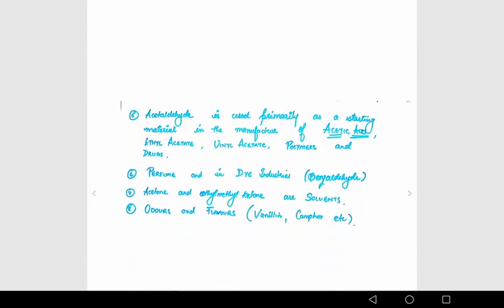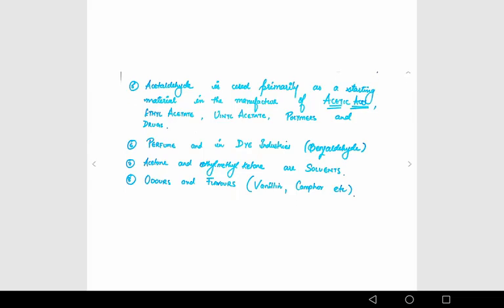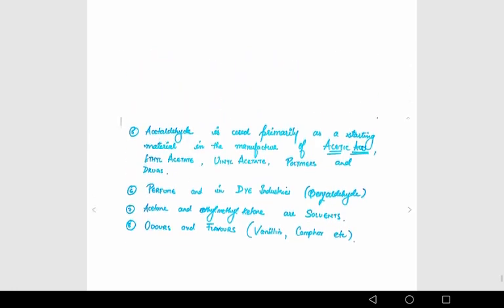Fifth, acetaldehyde is used primarily as starting material in manufacture of acetic acid, ethyl acetate, vinyl acetate, polymers and drugs. Sixth, perfumes and dye industry use benzaldehyde. Seventh, acetone and methyl ketone are solvents. Eighth, for odors and flavors like vanillin, camphor, etc.